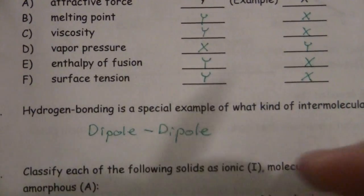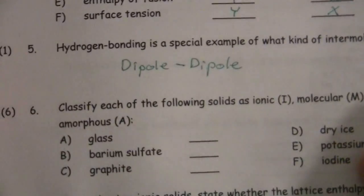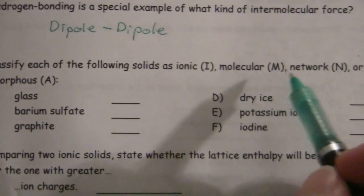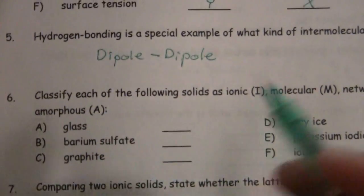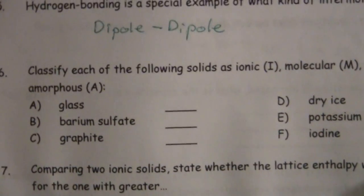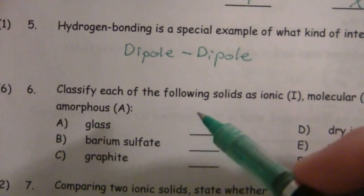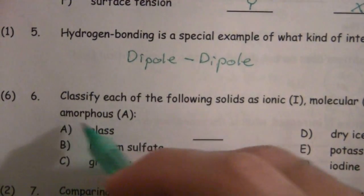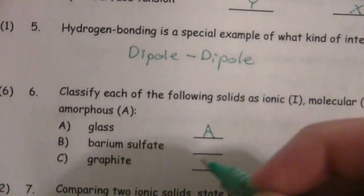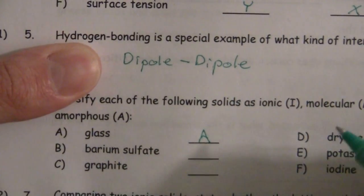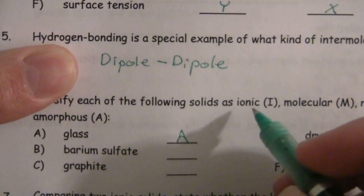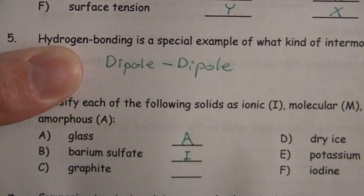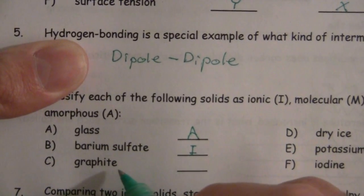Question six, classify each of the following solids as ionic, molecular, network or amorphous. This is really just recall and we'll remember that glass has that kind of a random structure and that's why it breaks in a random fashion. That's the amorphous solid. Barium sulfate is, we know that from last semester, that is an ionic compound because you have the barium ions and you have the sulfate ions.